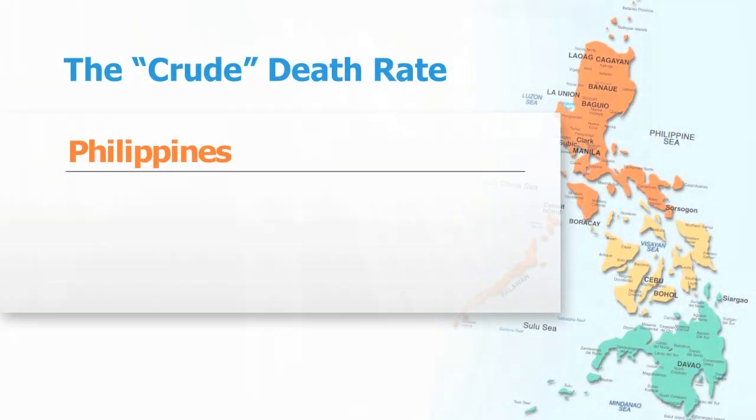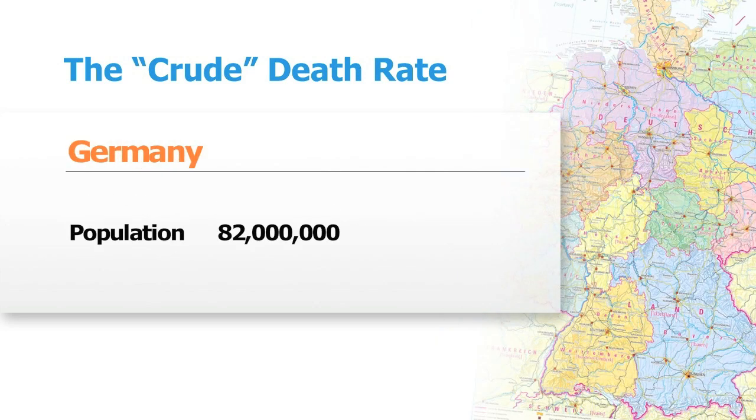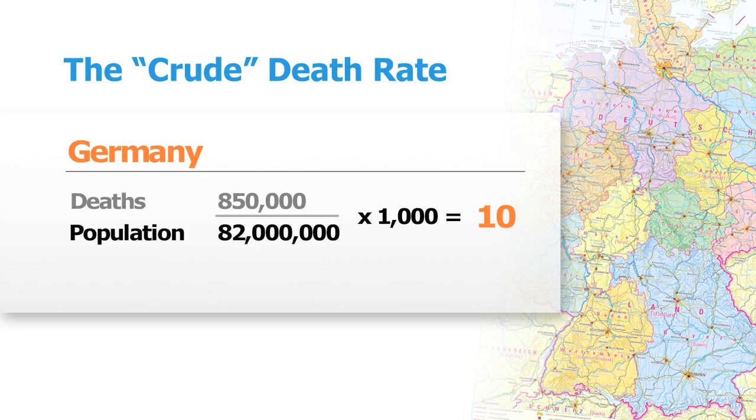One important measure in demography is the crude death rate, or the number of deaths per 1,000 population. If you remember last time, we talked about the crude birth rate, which is the number of births per 1,000 population — this is the other side. In the Philippines, a country of about 94 million, in a recent year there were about 450,000 deaths, which works out to about 5 deaths per 1,000 population. In Germany, a country of about 82 million people, there were about 850,000 deaths, or 10 deaths per 1,000 population. But wait — Germany has a crude death rate of 10 per 1,000 and the Philippines only 5, yet life expectancy at birth in Germany is 80 years while in the Philippines it's 69. How can that happen?